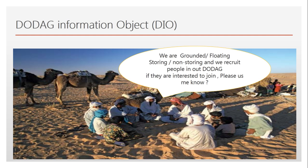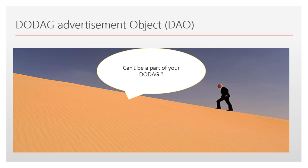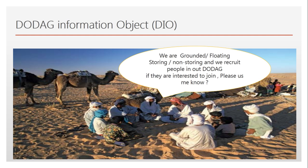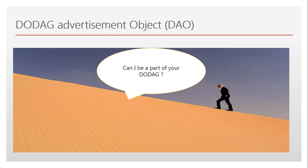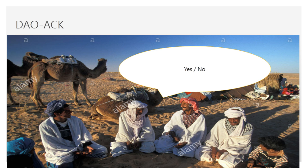Then there are already some tribes existing — think of these like a DODAG that has already been formed. They want to recruit more people, so they keep making an offer, screaming out that they are storing or not storing, grounded or floating, and that if any other human beings want to join, please let them know. This message is the DIO, or DODAG Information Object. Once DIO is sent, the person lost in the desert makes a request — the DODAG Advertisement Object — asking to be part of the DODAG. The existing DODAG then responds back with yes or no.